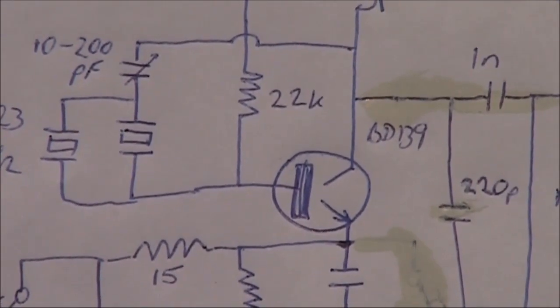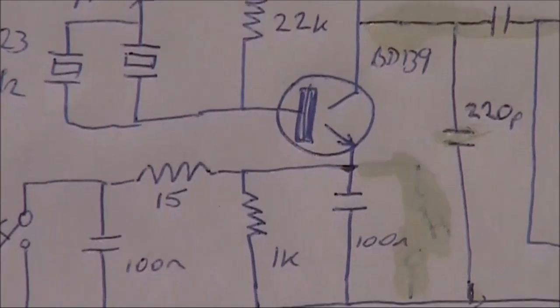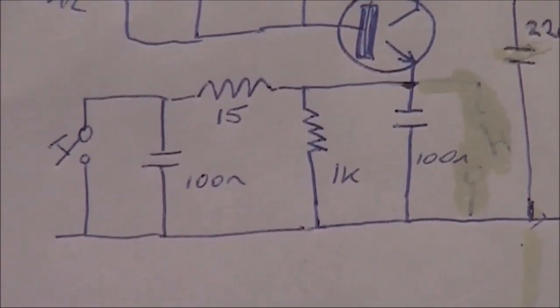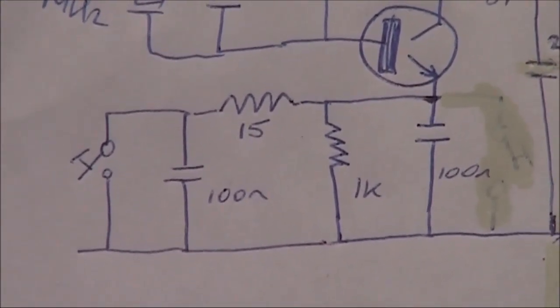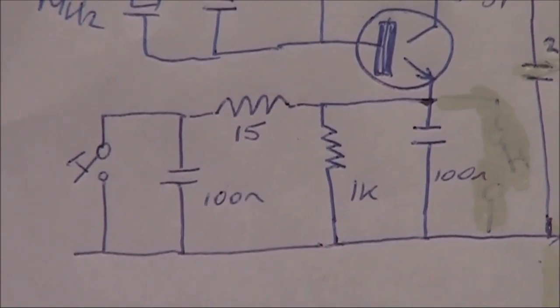The transistor is the BD139, commonly available transistor, that is good for RF, at least at frequencies like 3.5 and 7 megahertz.